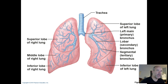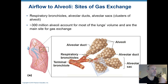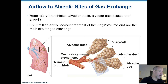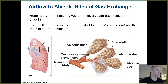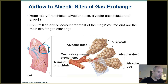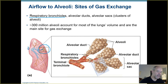Eventually you get way down deep in the lungs and you finally get to the air sacs where gas exchange takes place. Those bronchi eventually lead to even smaller air passageways called bronchioles. There are different types of bronchioles — terminal and respiratory bronchioles — and those lead to alveolar ducts.